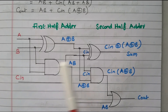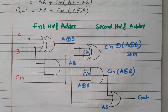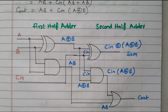In this video, we discussed the full adder: the truth table, simplified expression using K-map, and further simplification of sum and carry. These were implemented with normal XOR and AND gates, and finally implemented using two half adders. Subscribe to the channel for more videos and notifications. Soft copy of this material is available in the drive — the link is given in the description box. Thank you for listening.